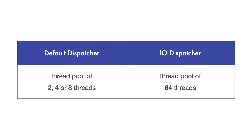In the use case implementation of this section, we want to calculate the factorial of a big number on a background thread. As this calculation is very CPU-intensive, we should use the default dispatcher.